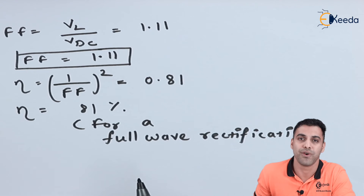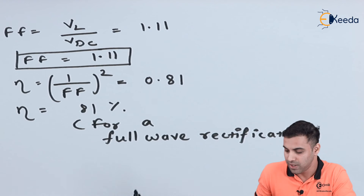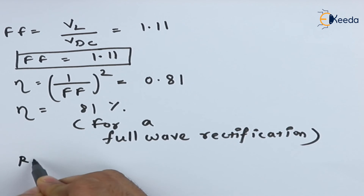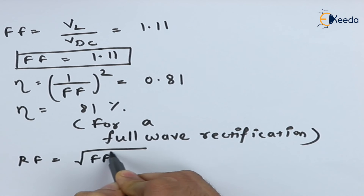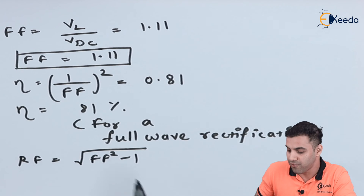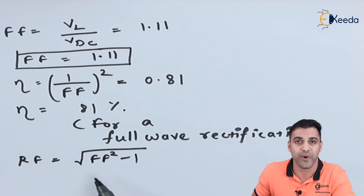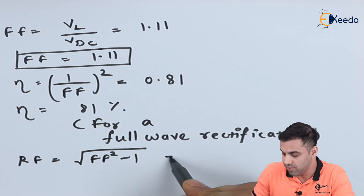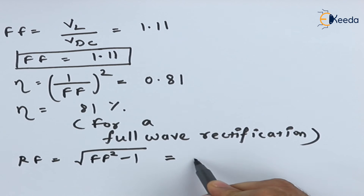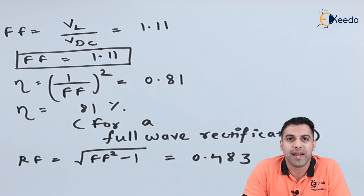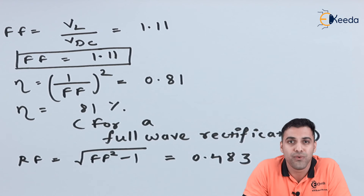Now let's calculate the ripple factor. The mathematical formula of the ripple factor is the square root of the form factor squared minus 1. To summarize this lecture, we discussed what full wave rectification is, the need for full wave rectification, and the advantages of full wave rectification over half wave rectification.